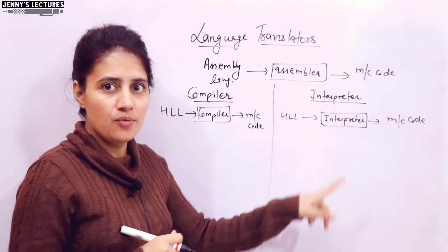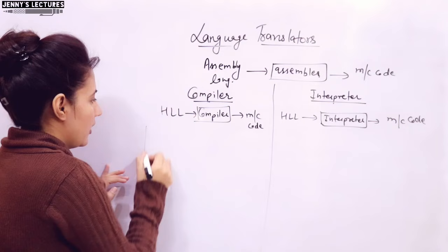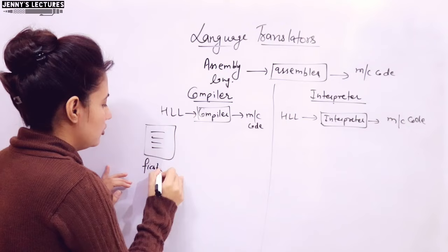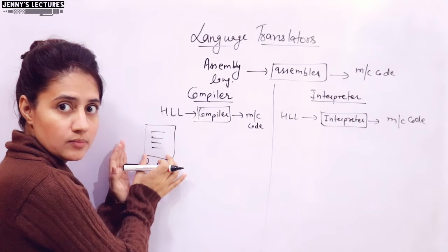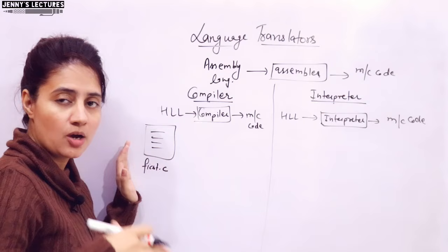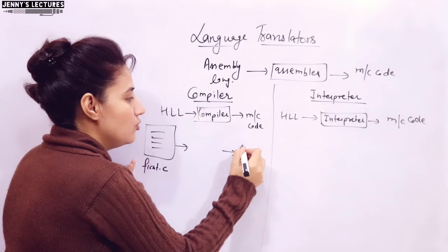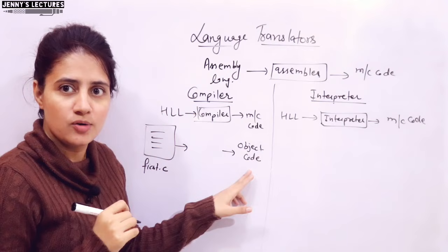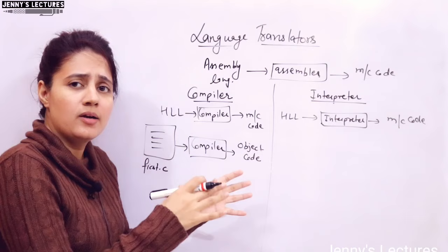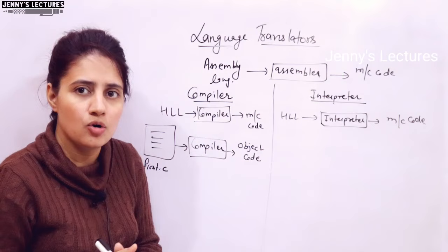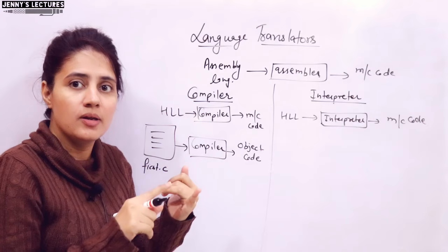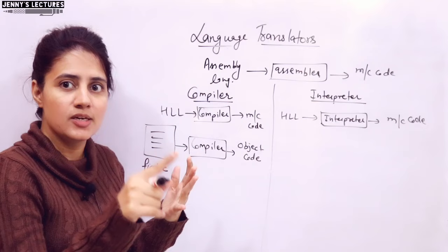Suppose you have written a program in C language — let's say the file name is first.c. The compiler will take this complete program — all the statements, maybe 10 or 100 statements — and convert them all into object code, machine code, zeros and ones. After that, linking is done, loading is done, an executable file is created, and then you run that executable file and get output. So the compiler works on the model: translation, linking, loading — three steps. We will discuss this complete process in the next video.